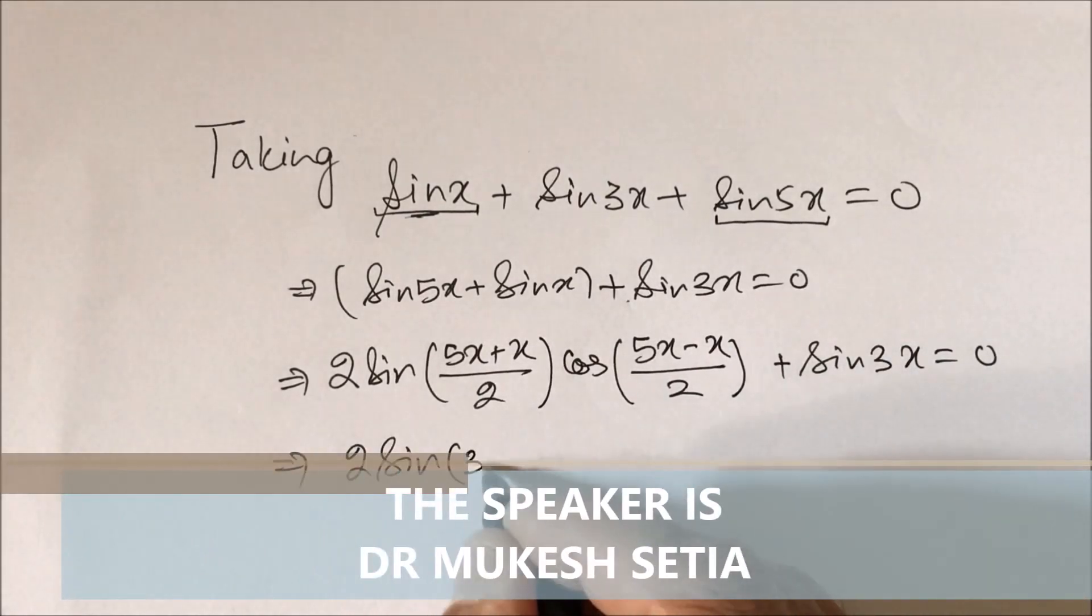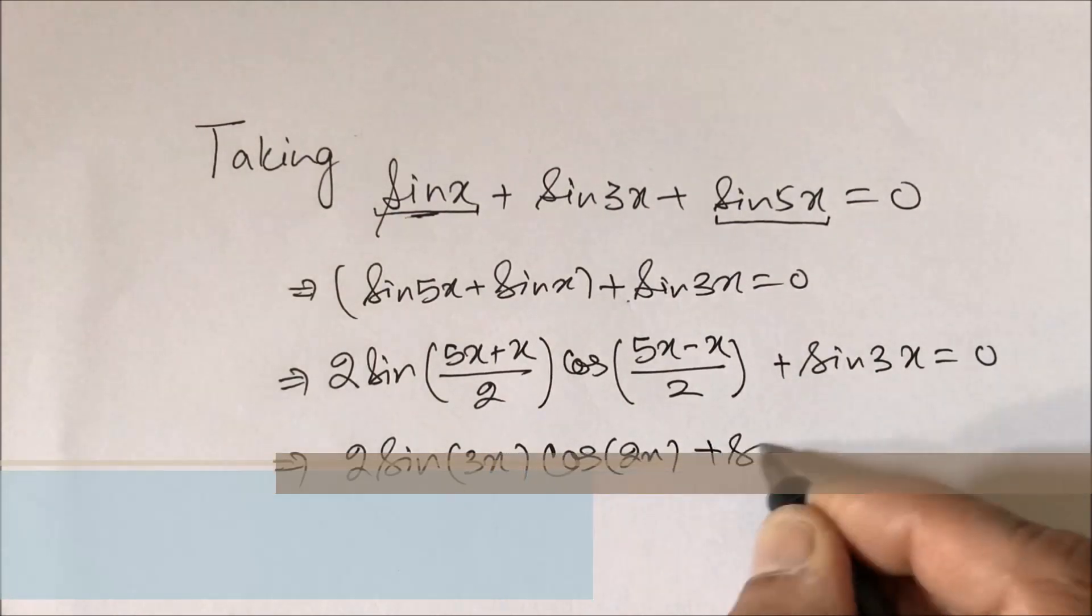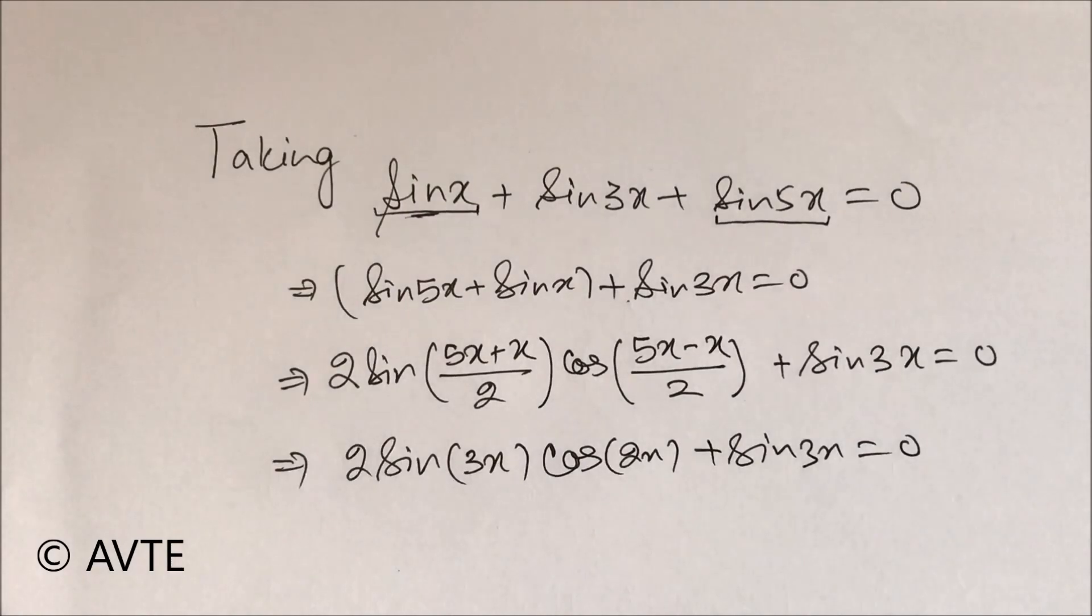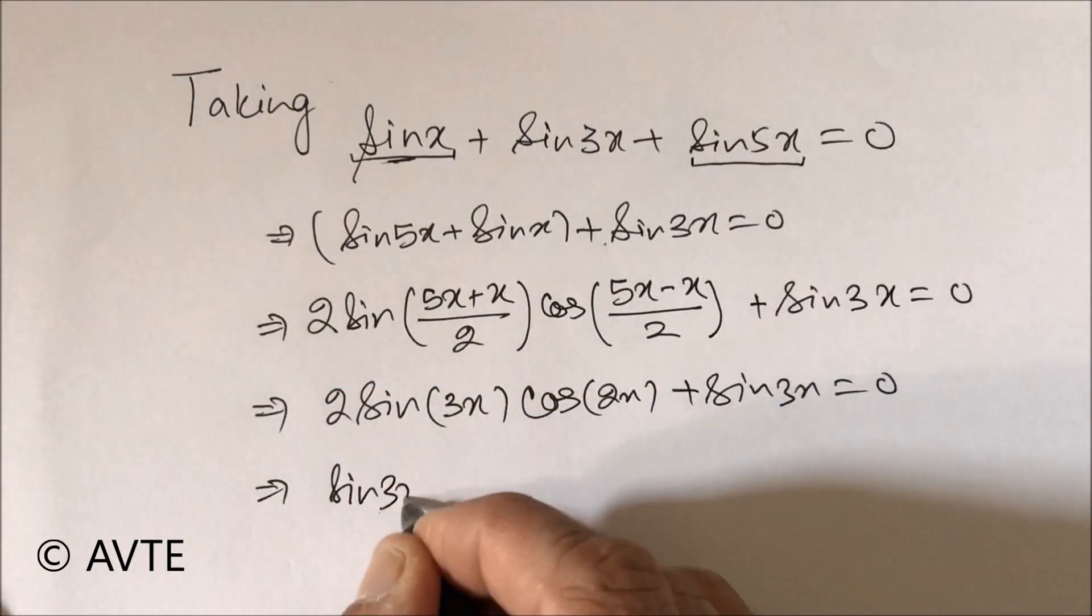And this is 2 sin 3x cos 2x plus sin 3x is equal to 0. Now we can easily take sin 3x common and we'll be left with two factors.